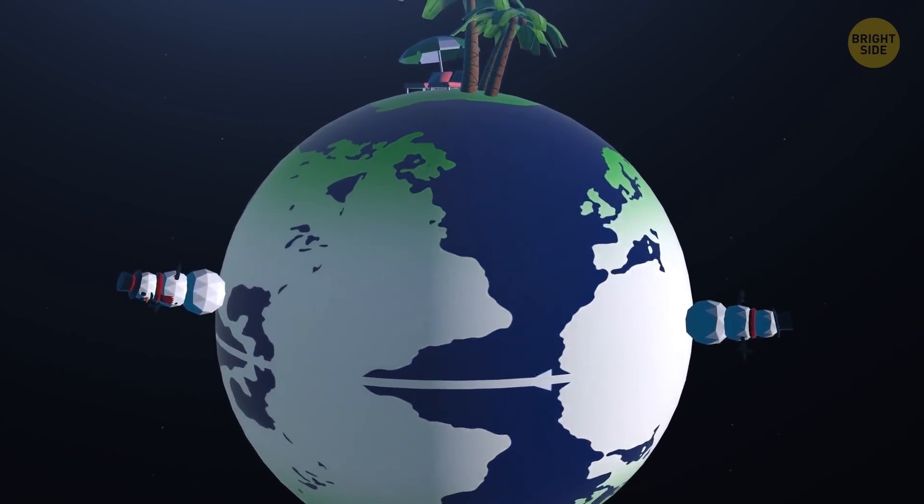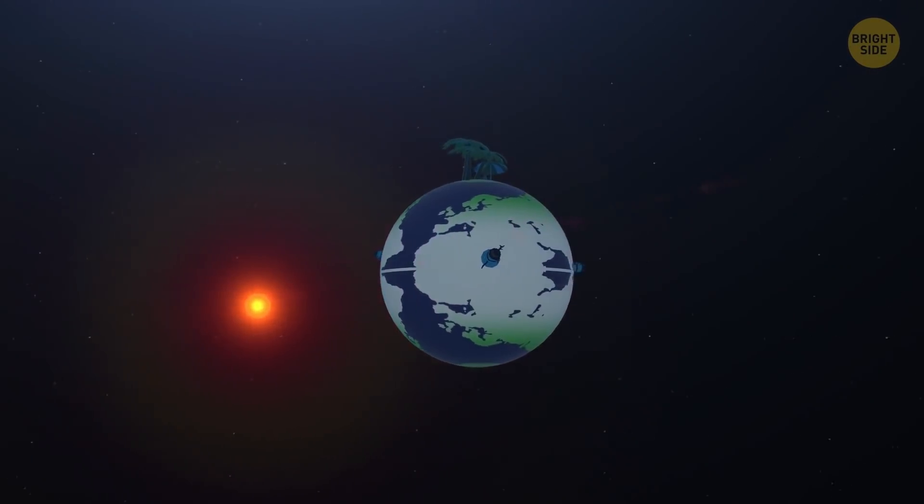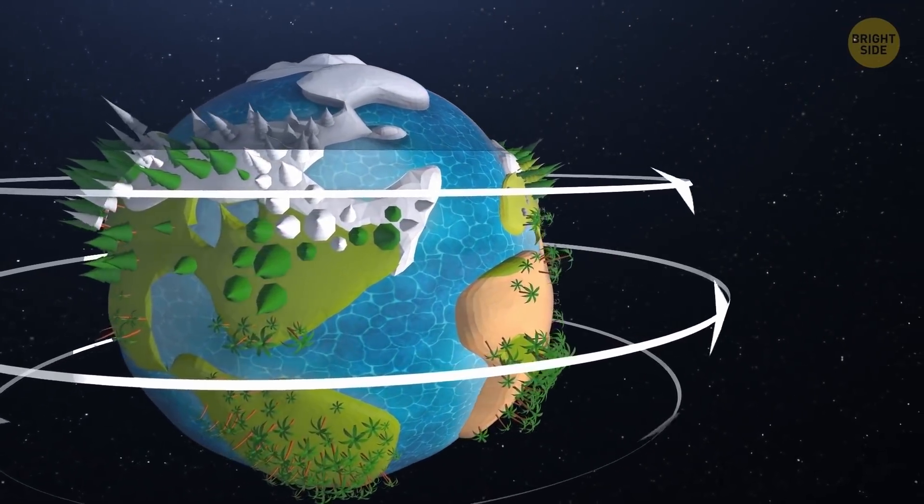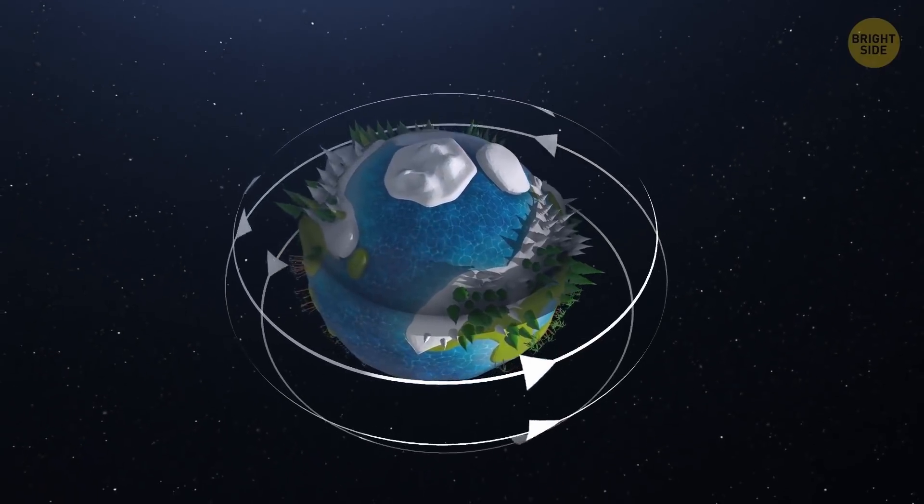But since life on our planet is rarely about symmetry, the effects of the Earth rotating backward would be way more complicated. But keep in mind that everything will depend on how our planet would change the direction of its rotation. For example, let's imagine that it happened suddenly.